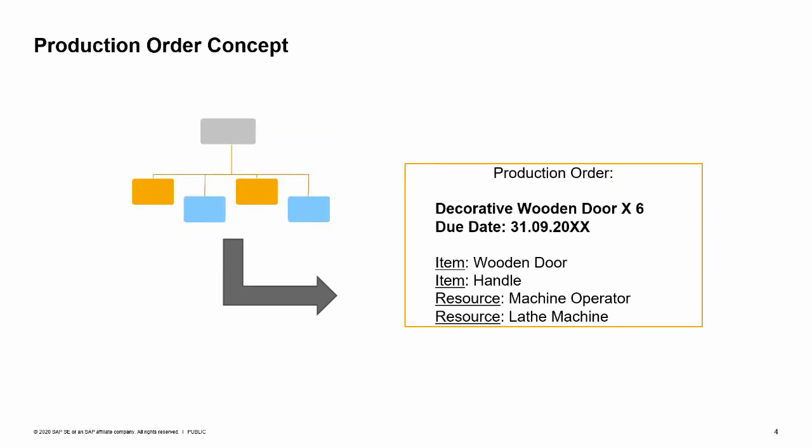A production order is a command to produce or repair a production item. A bill of materials (BOM) is copied into the production order document. Then the needed quantity of finished item is entered together with the desired due date of production and other relevant data. The production order also tracks all the material transactions and costs involved in the production process.